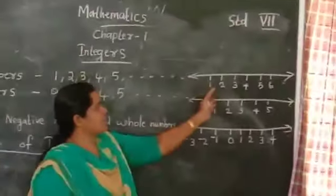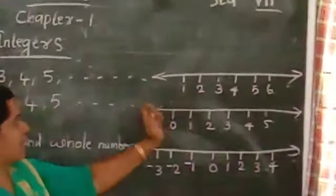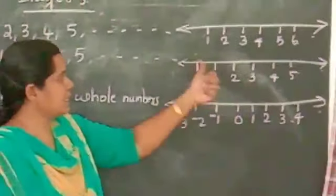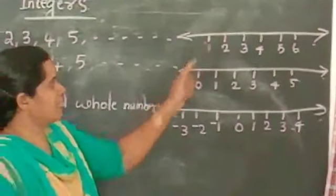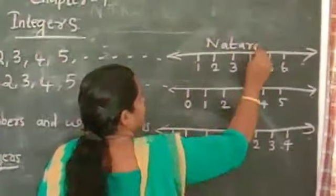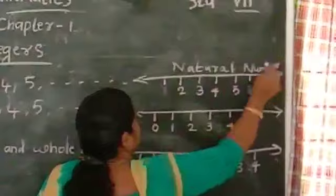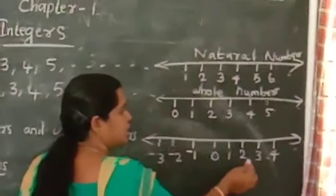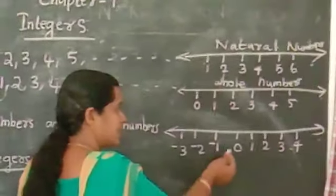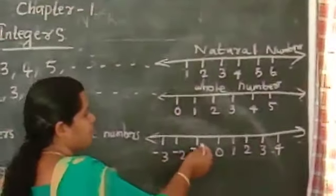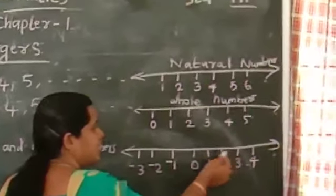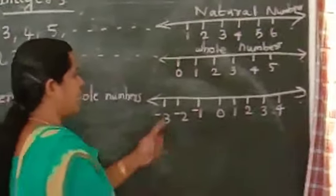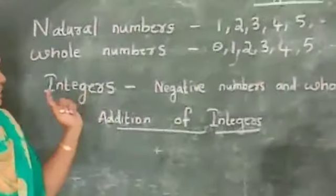We can represent natural numbers on the number line starting from 1, 2, 3, 4 and so on. Whole numbers are represented starting from 0. On the number line, left of 0 the value becomes less, and right of 0 the value increases as we move from left to right. Moving from right to left, the value decreases. So 0, positive numbers and negative numbers together are called integers. That we have learned in standard 6.